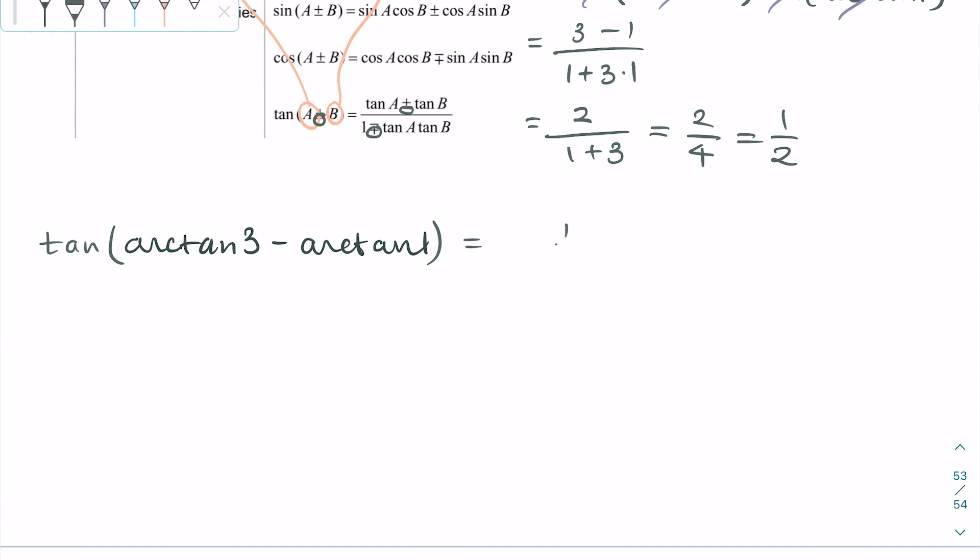Recall that arctan 3 minus arctan 1 is the actual answer of the integral, and we took the tangent of this. This means we have to take the arctan to return the real value of the integral.